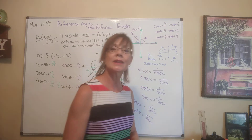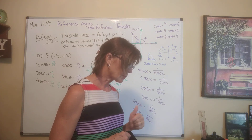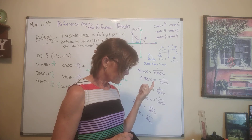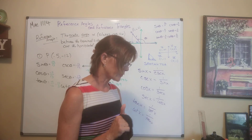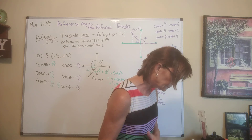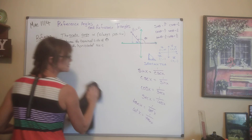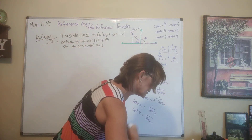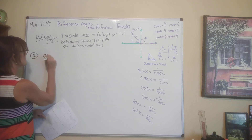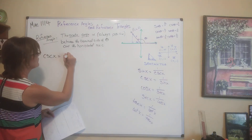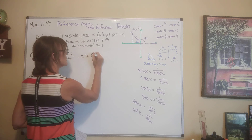The next example is a bit different — it gives us a trig function instead of a point. Find the exact values of the other 5 trig functions given that the cosecant of x equals negative 25 over 24 and x is in quadrant 4. Draw an xy-axis. Quadrant 4 is where we're at, so draw an angle whose terminal side is in quadrant 4.